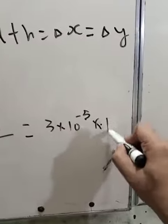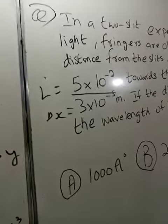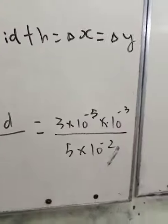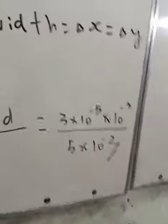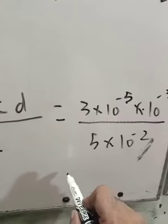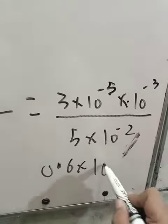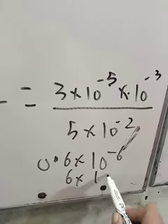So del x equals lambda times L upon d. L is 5 into 10 power minus 2. Now del x is 3 into 10 power minus 5. If we solve it, then lambda equals 6 into 10 power minus 7. We can do all the answers.